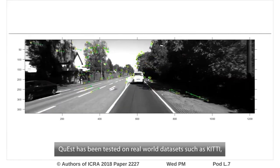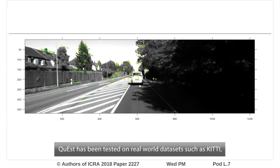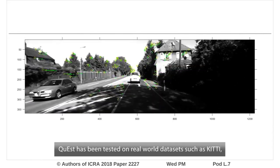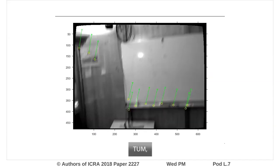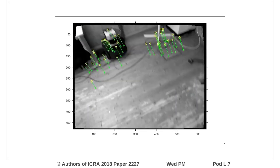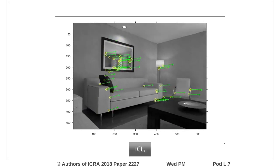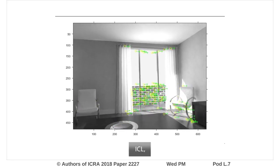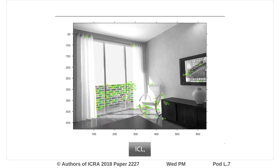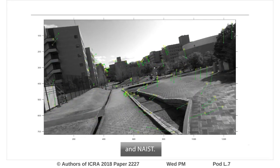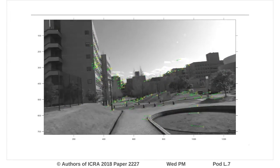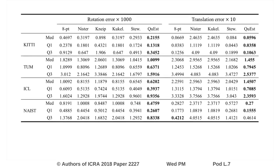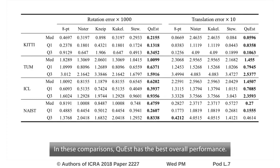Quest has been tested on real-world datasets such as the KITTI Visual Odometry SLAM dataset, TUM RGBD SLAM dataset, ICL-NUIM RGBD Benchmark dataset, and TrackMark's NACE campus dataset. In these comparisons, Quest has the best overall performance.